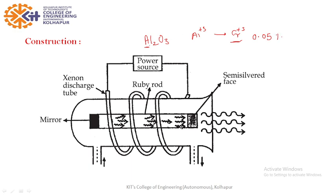This is the chemical composition of ruby. When we use it in laser, remember chromium is active center. Means stimulated emission we get in chromium.